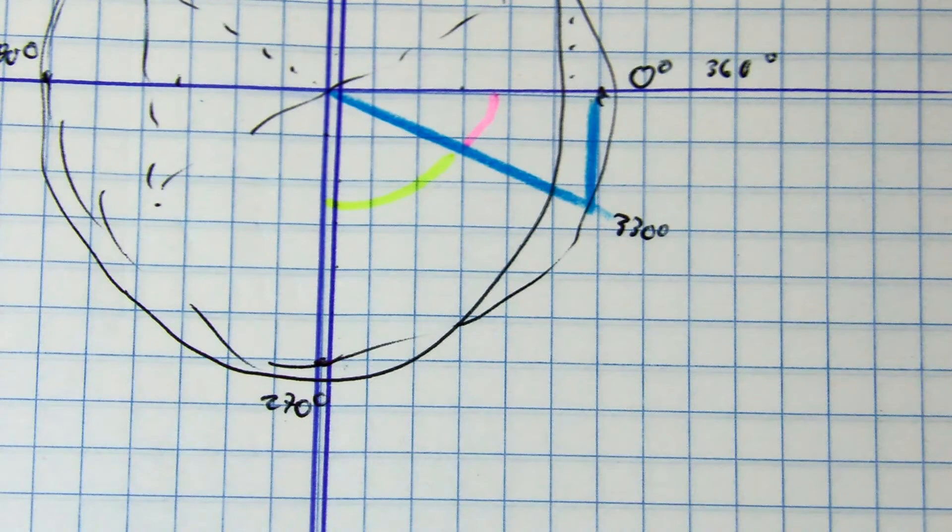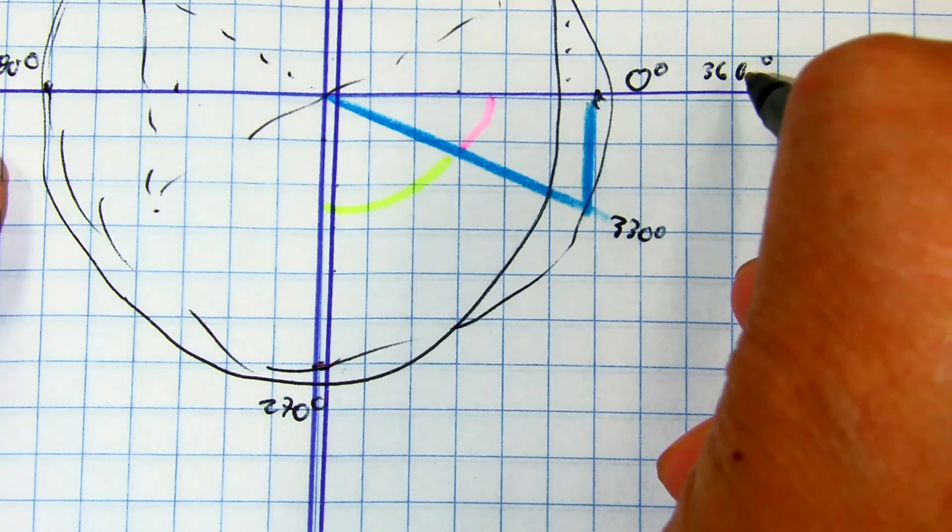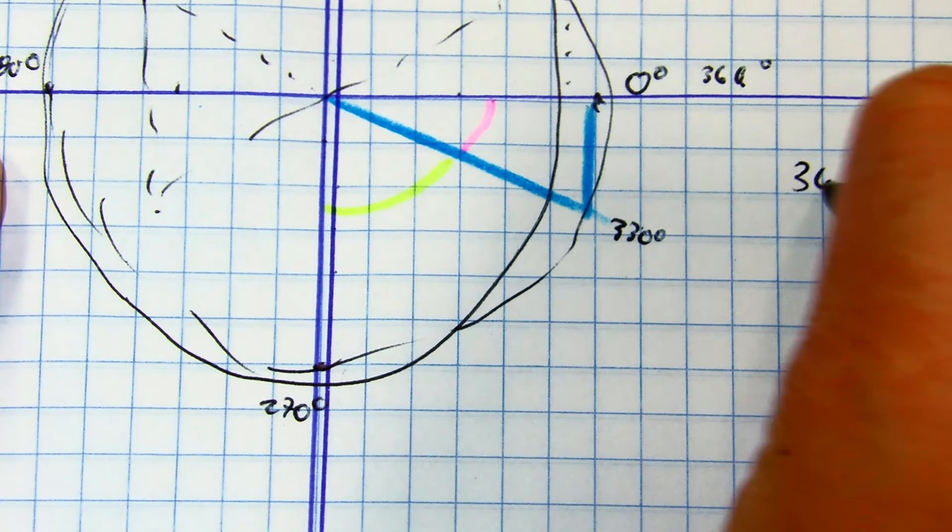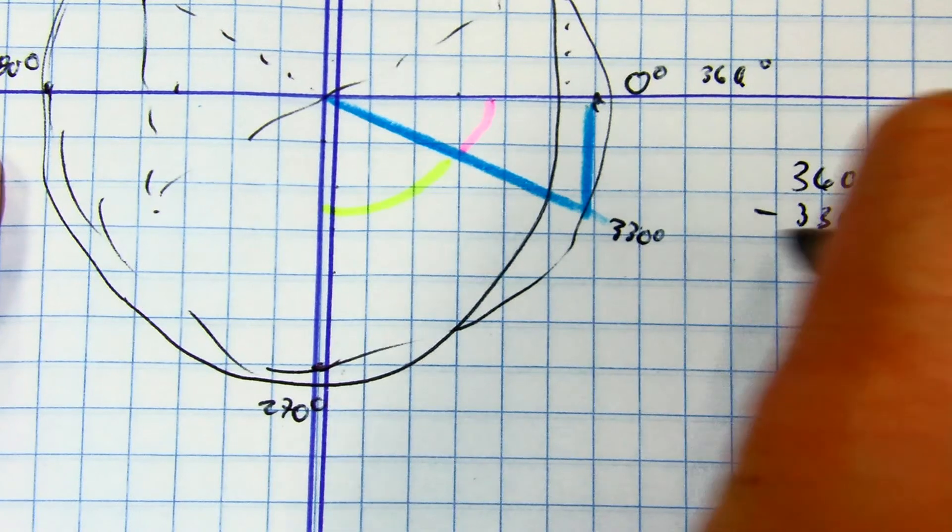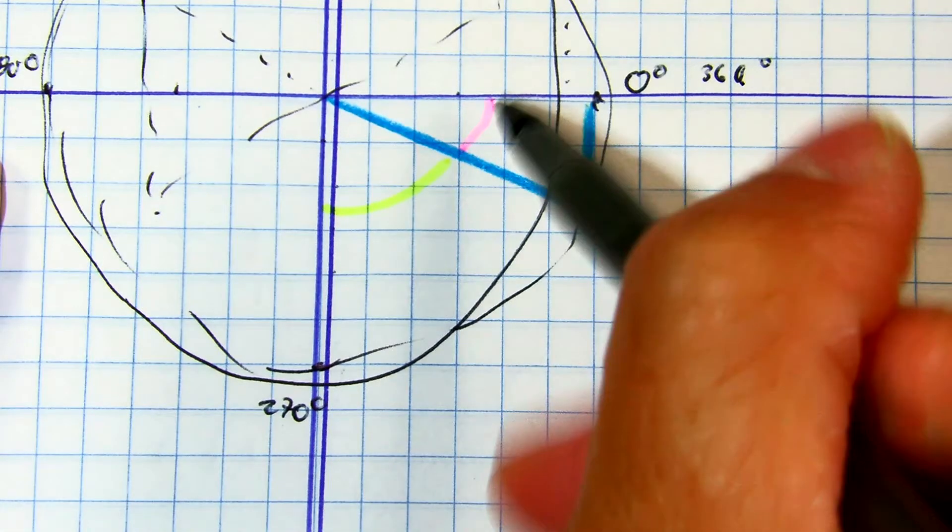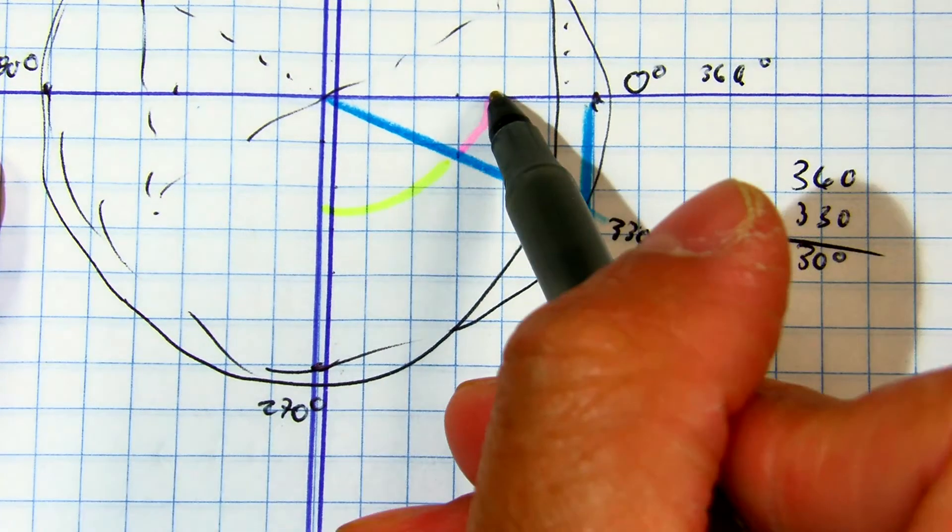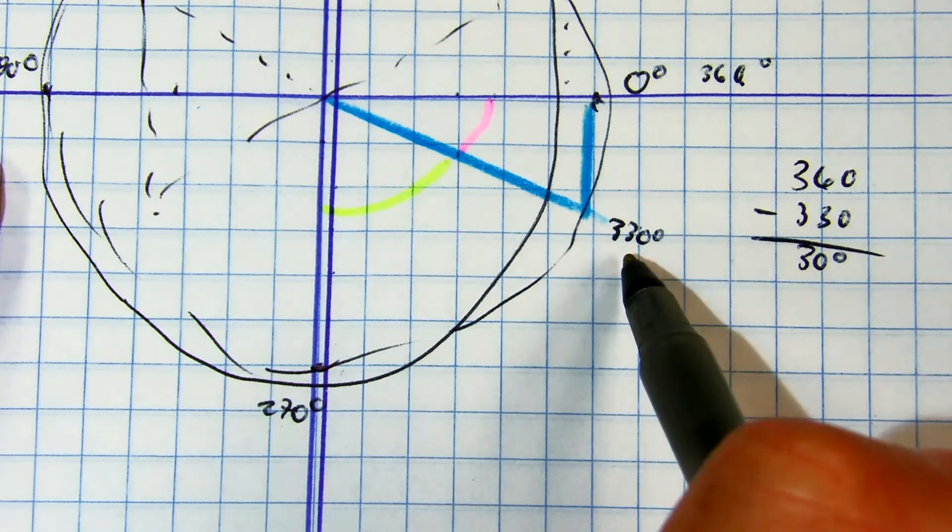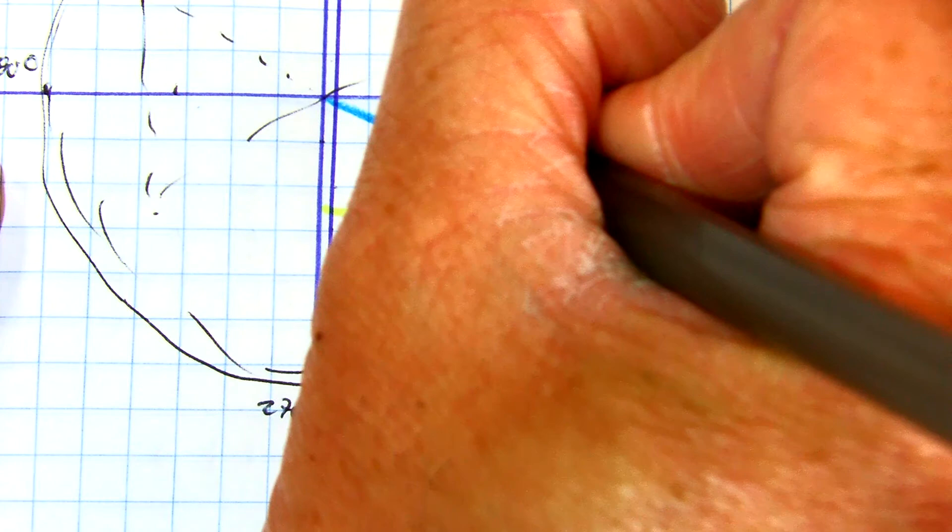I can subtract them. 360 minus 330 gives you what? 30 degrees. 330 plus 30 gives you 360, so this angle is 30 degrees.